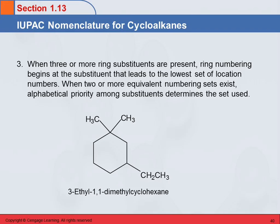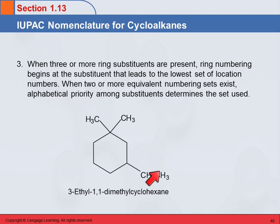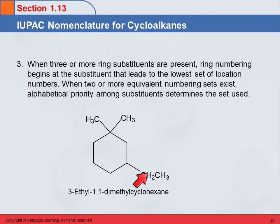Let's look at this example — it's already named, but let's understand why. Looking at the ring: it has six carbons, so that's where 'cyclohexane' comes from. Six carbons is hexane; in a ring, it's cyclohexane. Now look at the substituents attached to the ring — you'll often see the ring drawn as a line-angle formula while substituents are shown as condensed structural formulas. We have a methyl group, another methyl group, and an ethyl group.